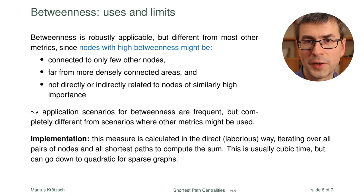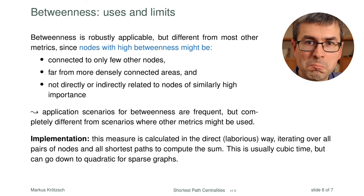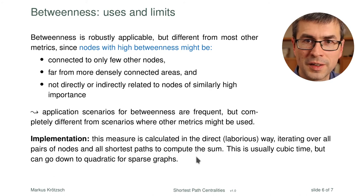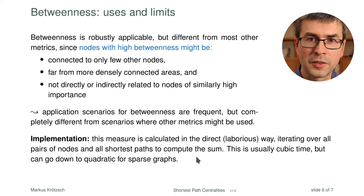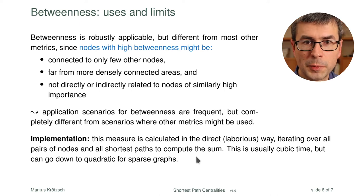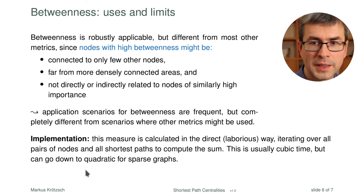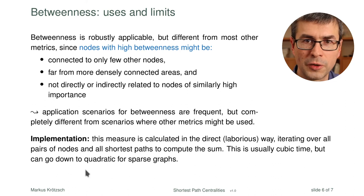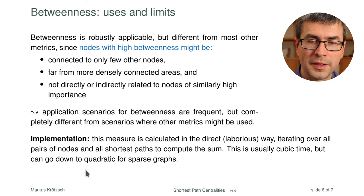Implementation-wise, it is also not easy. The main way of computing betweenness is to iterate over all pairs of nodes and all shortest paths and simply compute the sum — essentially the pedestrian approach the formula suggests. This is a cubic-time algorithm, and for a large network it will take very long. You can get it down to quadratic for sparse graphs, and you can use sampling to consider only paths between a certain sample of node pairs that sufficiently represents the overall network structure.